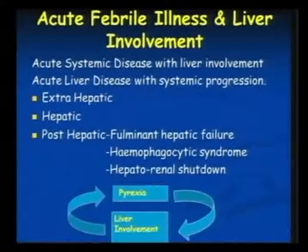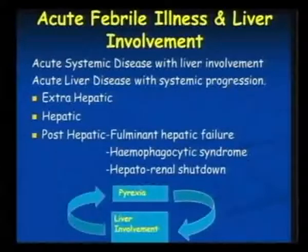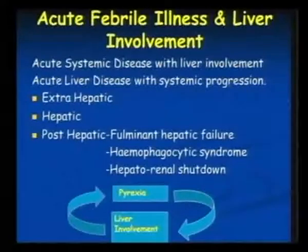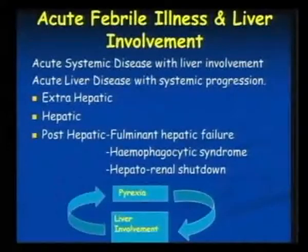As a clinician, I see a patient who has an acute systemic disease with liver involvement, and a patient who has a liver disease with systemic progression symptoms — two different types of patients, but both systems involved. We need to diagnose what the primary involvement is. We can divide these patients into two or three types: one is extrahepatic, meaning a systemic disease with liver involvement; or a primary liver disease; or a liver disease with systemic progression further, like fulminant hepatic failure, hemophagocytic syndrome (HLH), and hepatorenal shutdown.